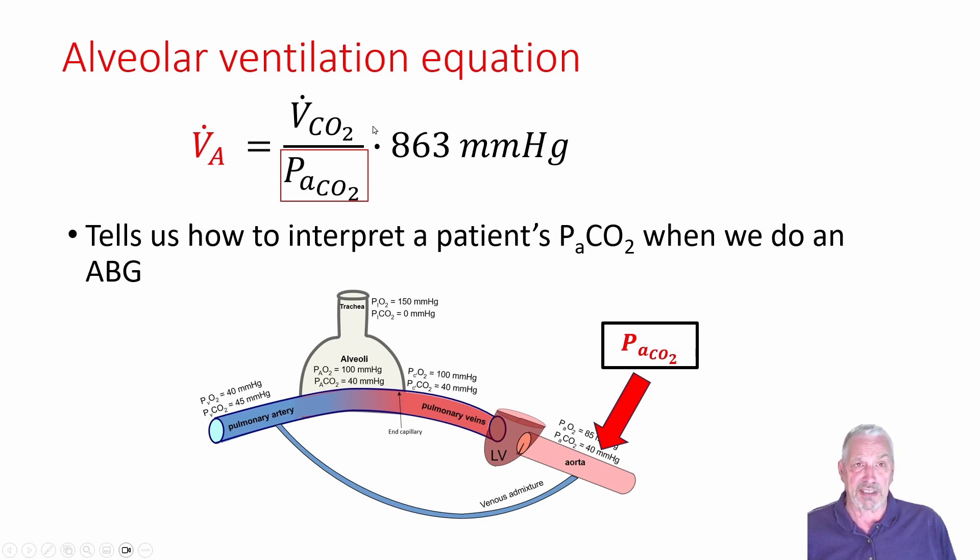The next thing you do is look at the other side of the equation. The things that went into Alveolar Ventilation were carbon dioxide production, V̇CO2, and the arterial value of carbon dioxide. And finally, this 863 millimeters of mercury that sometimes happen.